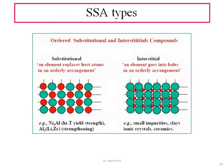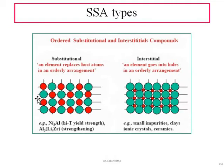Moving to the classifications of solid solution alloys — they are widely classified into two types: substitutional and interstitial. In substitutional type, the new atom (shown in red) replaces an existing atom, coming as a substitute and taking the position of the original atom. In the interstitial type, the new atoms take the interstitial spaces between the larger atoms.